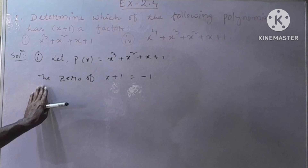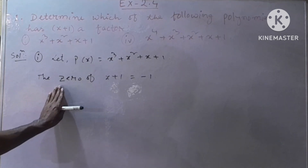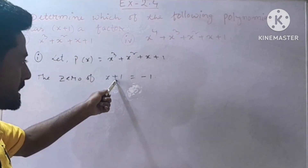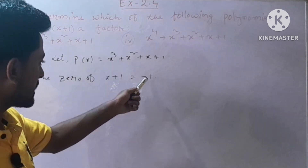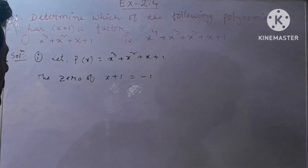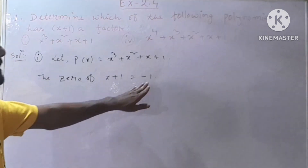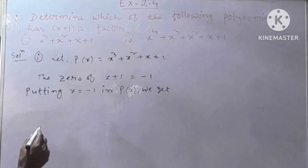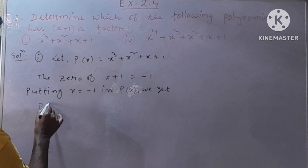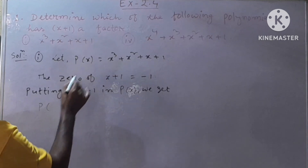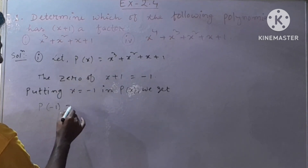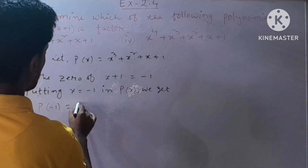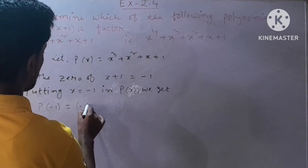The zero of the given linear polynomial x plus 1 is equal to minus 1. Now we put minus 1 in the given polynomial P of x. Then we get P of minus 1 equal to: in place of x we put minus 1 cube.